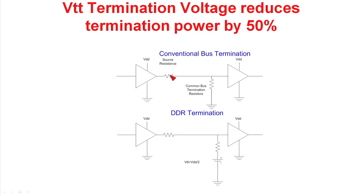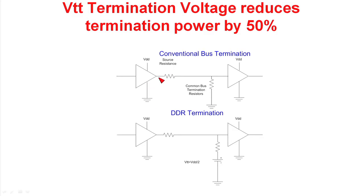Conventional bus termination is like this picture here. You have a source resistance from the driver driving the bus, then at the end of the bus, the resistor is tied to ground. This gives a determination of characteristic impedance with this resistance. When the sending device is high, you have your VDD applied across the source resistance and the common mode bus resistors, and it results in a certain amount of dissipation. When it's low, there's no voltage across the two resistors, and there's no dissipation in the resistors.